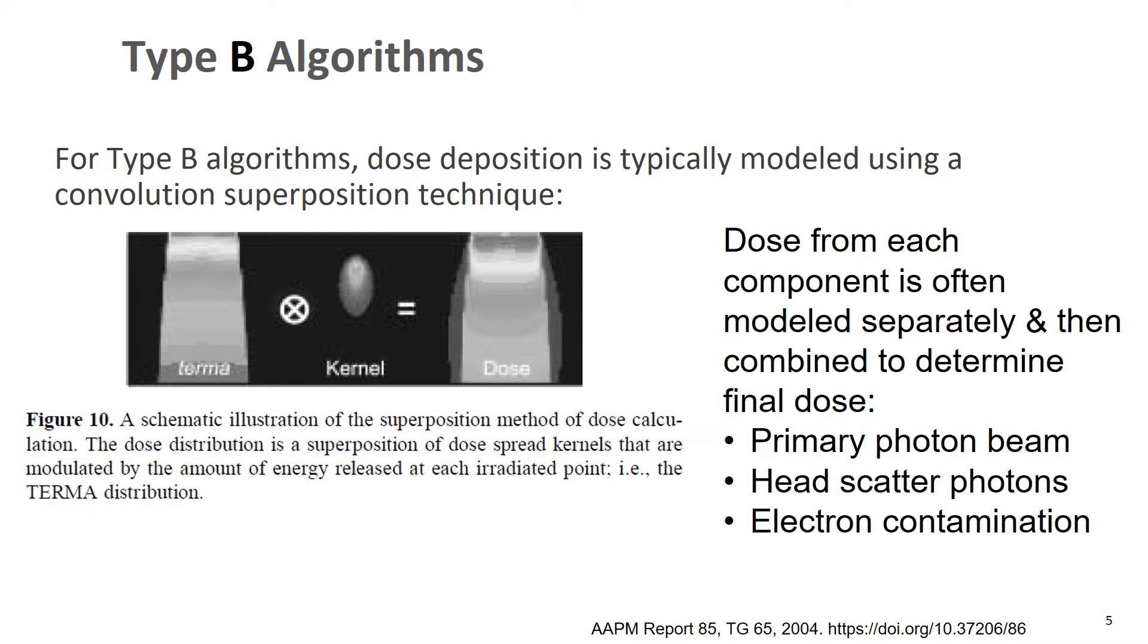And this process can be carried out separately for each of the individual components. So for instance, there may be a dose kernel for the primary photon beam, for the photons that are scattered, like head-scattered photons, and then the electron contamination. And each of those may have their own kernel and dose convolution that occurs. And then you would add up the combination of those three components to get your final dose.